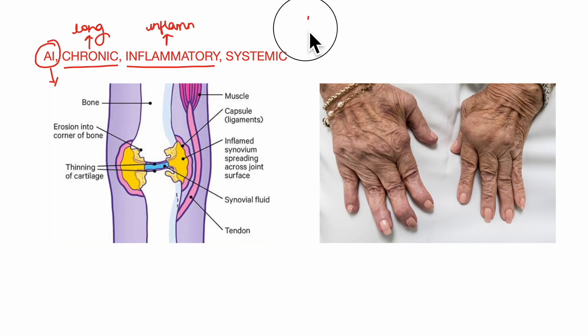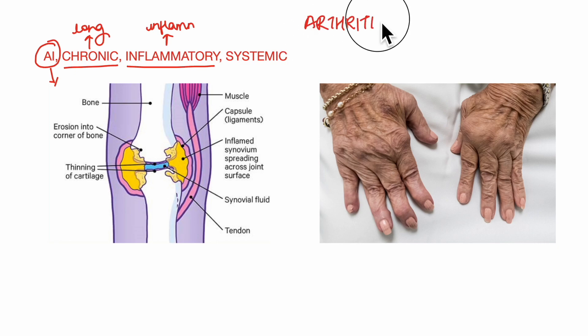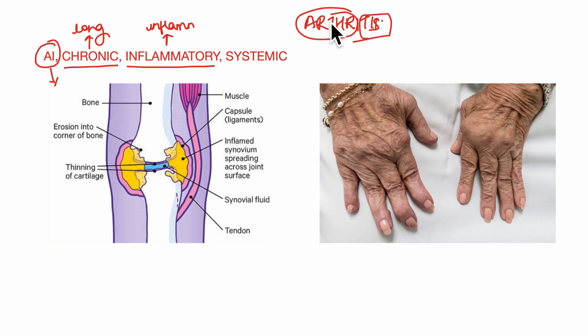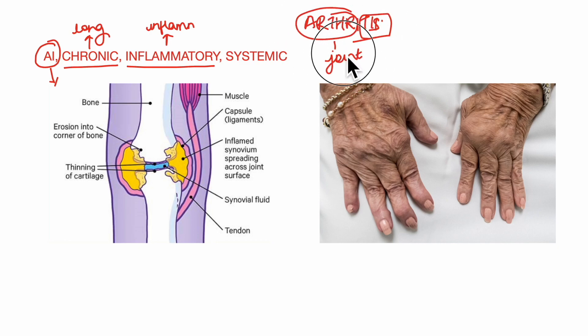As you can see in the term arthritis, the suffix '-itis' means inflammation and 'arthro' means joint. So there is inflammation mainly in the joints.